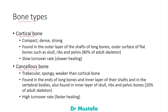The cortical bone is the compact, dense, and strong type of bone. It is found in the outer layer of the shafts of long bones and the outer surface of flat bones such as the skull, as well as in the ribs and pelvis. Cortical bone makes up 80 percent of the adult skeleton.